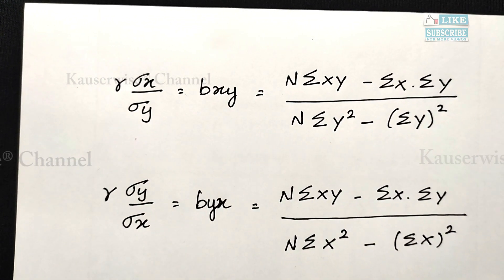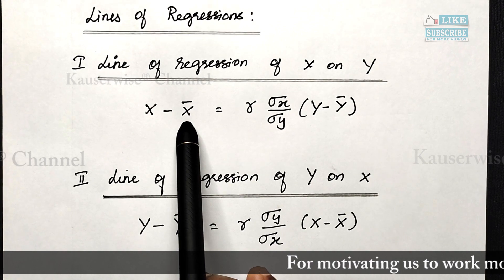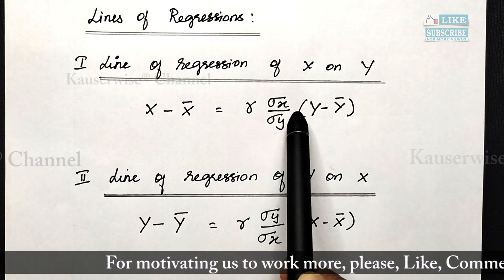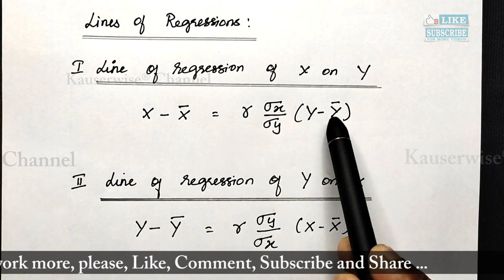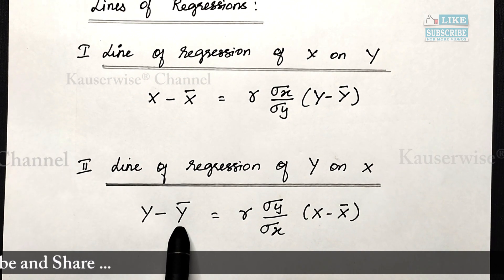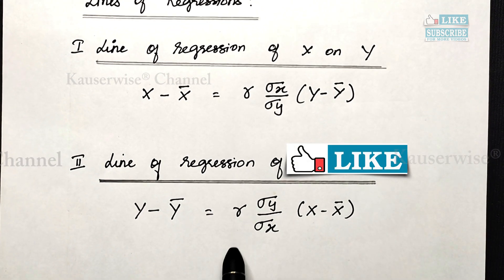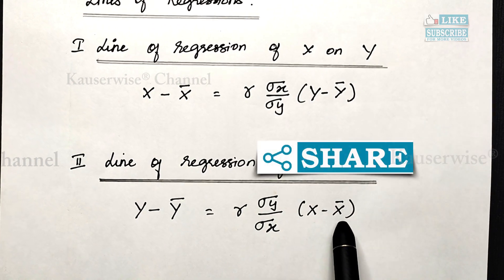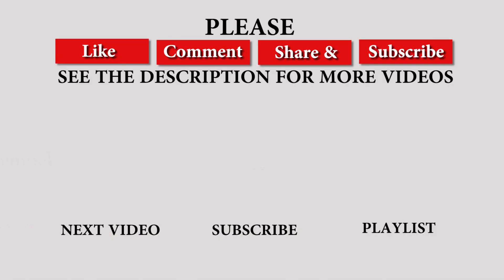To summarize the formulas for lines of regression: the line of regression of x on y is x minus x-bar equals b_xy times (y minus y-bar); and the line of regression of y on x is y minus y-bar equals b_yx times (x minus x-bar). Based on these formulas, we are going to see numerical problems in the upcoming series — links are in the description box. Hope you liked this video. Please hit like, comment, subscribe and share with your friends. Thank you.